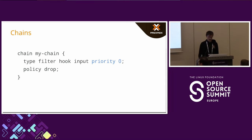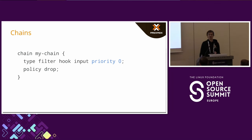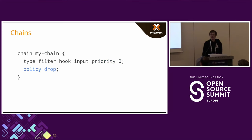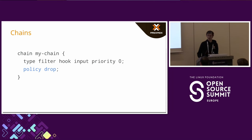There are certain points in the network lifecycle at certain priorities where, for instance, conntrack gets executed — there's a specific priority for conntrack. So if you wanted your chain to execute before conntrack, for instance to change some conntrack information, you would give it a priority so it runs before conntrack. You can also define a default policy: every base chain must have one, and if a packet doesn't match any rules in the chain, it executes the default policy — in this case, drop.